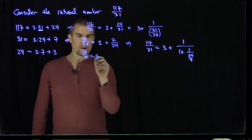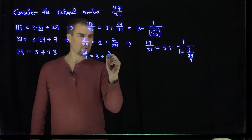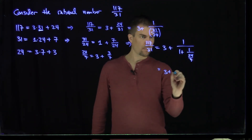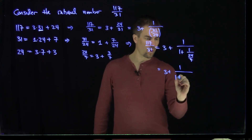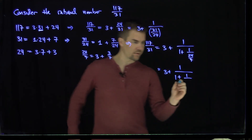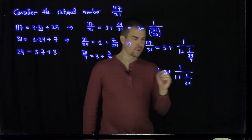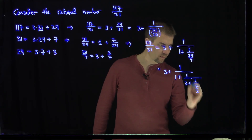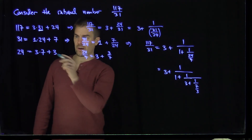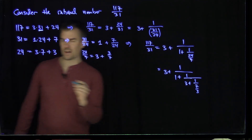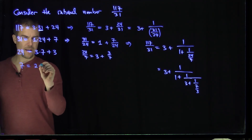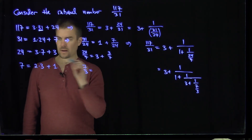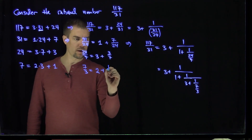So 24 over 7 is equal to 3 plus 3 over 7. I'm able to continue this fraction, writing it as 3 plus 1 over 1 plus 1 over — and 24 over 7 is going to be 3 plus 3 over 7. I'll write 3 over 7 as 1 over 7 over 3. Then 7 is two copies of 3 plus 1, which tells me 7 over 3 is exactly equal to 2 plus 1 third.